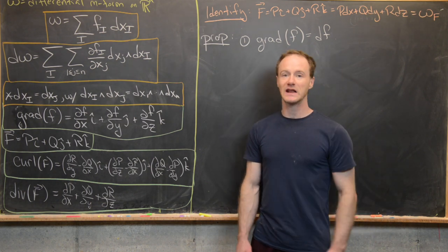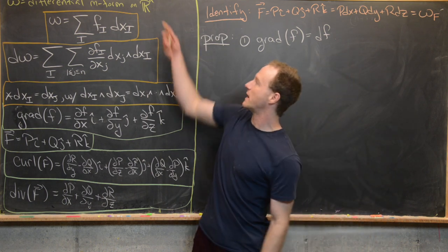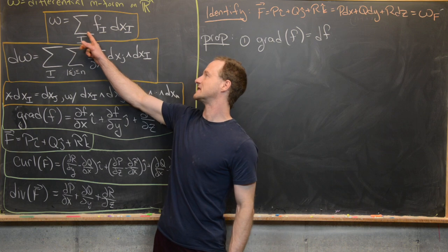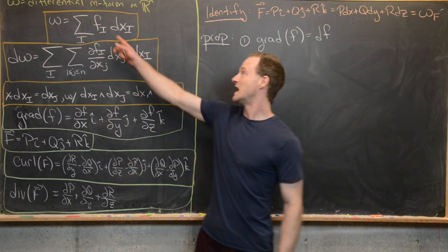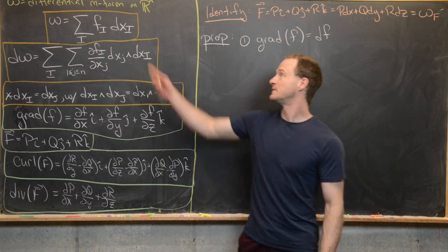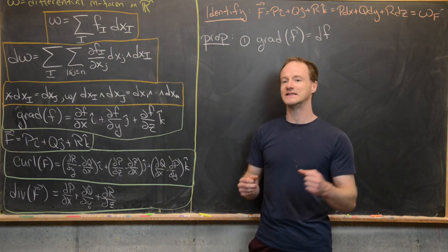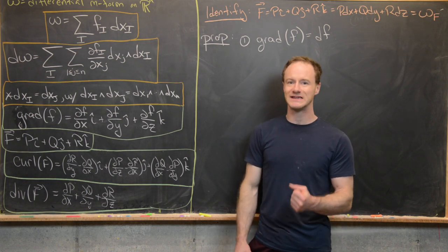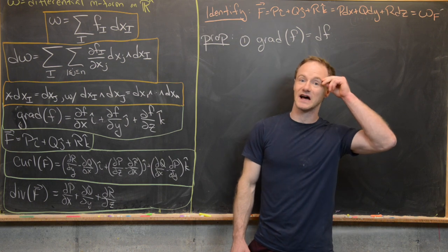Let's recall some things. If we've got ω, which is a differential m-form on ℝⁿ, then it can be written as a sum over multi-indices i of f_i, where those are smooth functions, and then dx_I, where dx_I is an elementary m-form given by dx_{i1} wedge all the way up to dx_{im}.